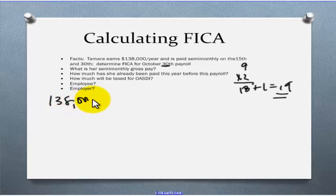If we know her annual pay is $138,000, we'll divide that by how many pay periods are in a semi-monthly year. That would be 24. So, $138,000 divided by 24 is $5,750. So far she has gotten paid $5,750 19 times, right? So, $5,750 times 19 is going to give us $109,250.